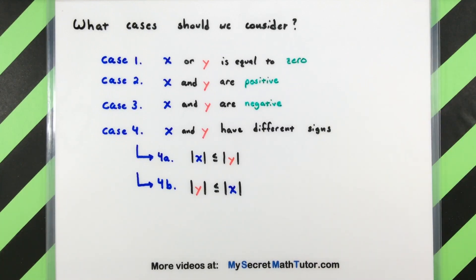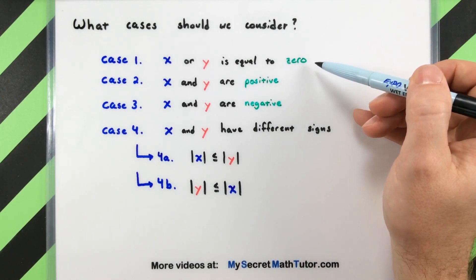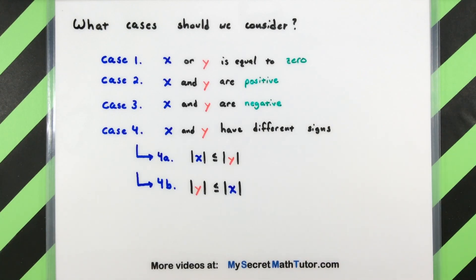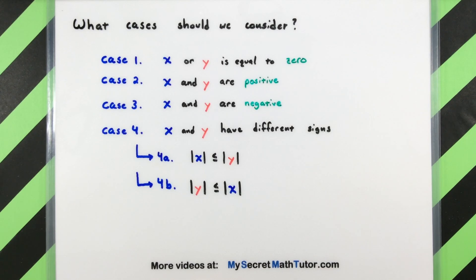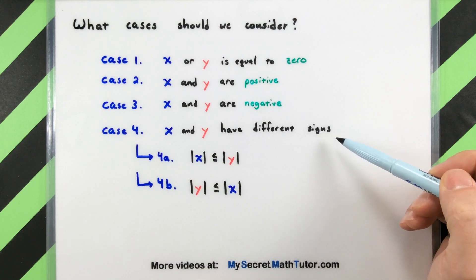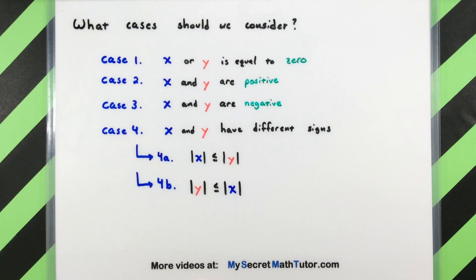Since we're doing this on a case-by-case basis, we have to be encompassing of everything that could happen with our values for x and y. We'll get around some redundancy without loss of generality, but there are cases we definitely have to nail down. It's perfectly possible that one value could be 0; without loss of generality, we assume x is 0. Other cases include: both have the same sign — either both positive or both negative. And finally, x and y have different signs, where we also have to consider which one is larger in absolute value.